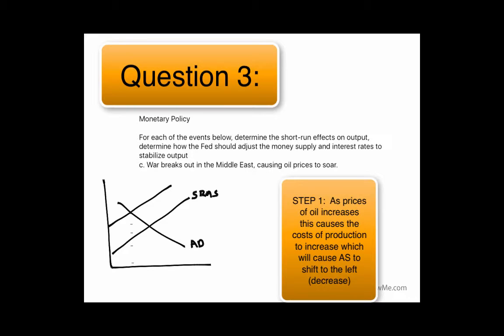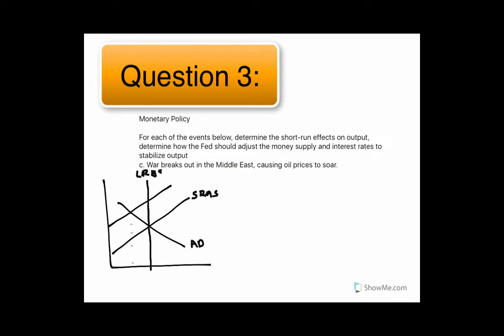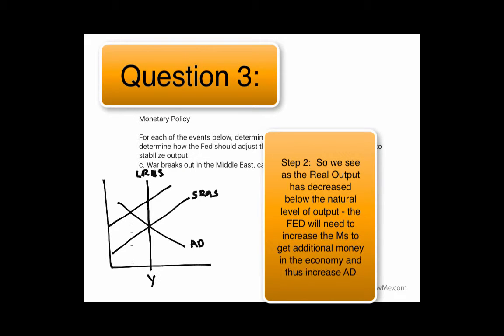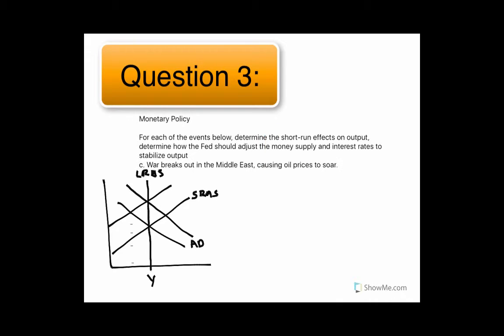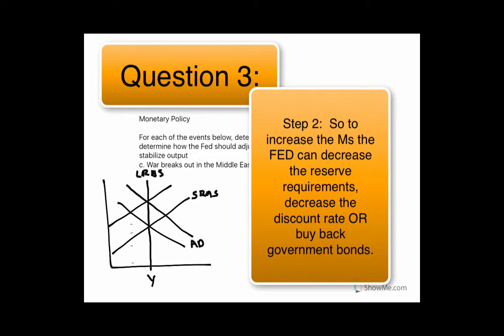And so if we wanted to increase and get back to this long-run line here where output was, the Federal Reserve would want to try and increase aggregate demand, which they would do by, like we said in the previous example, increasing the money supply.